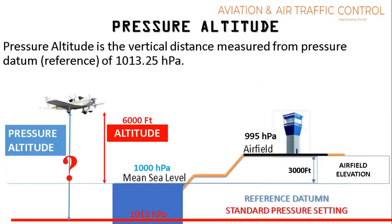Remember that indicated altitude is vertical distance from mean sea level. In this example, our vertical distance from mean sea level is 6000 feet, so indicated altitude is 6000 feet. Pressure altitude is the vertical distance measured from a pressure datum reference of 1013.2 hectopascal, that is standard ISA. To understand the difference, remember the reference datum for indicated altitude is mean sea level, while the reference datum for pressure altitude is ISA 1013.25 hectopascal.